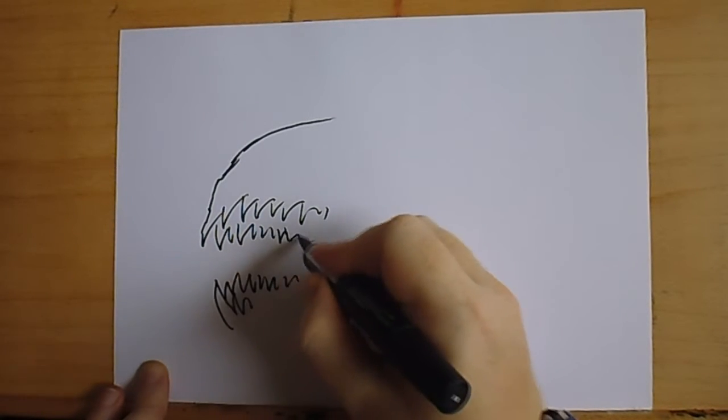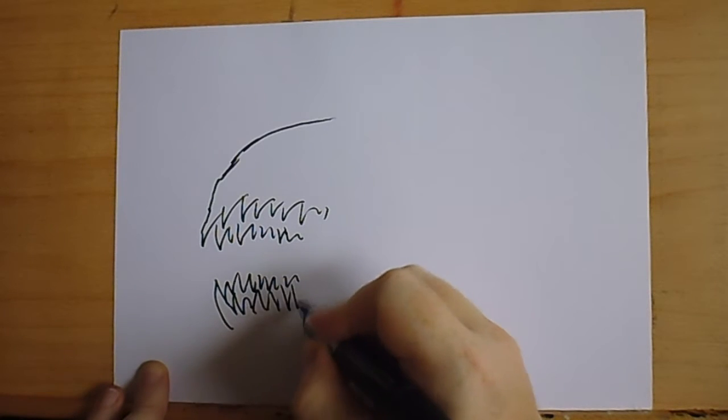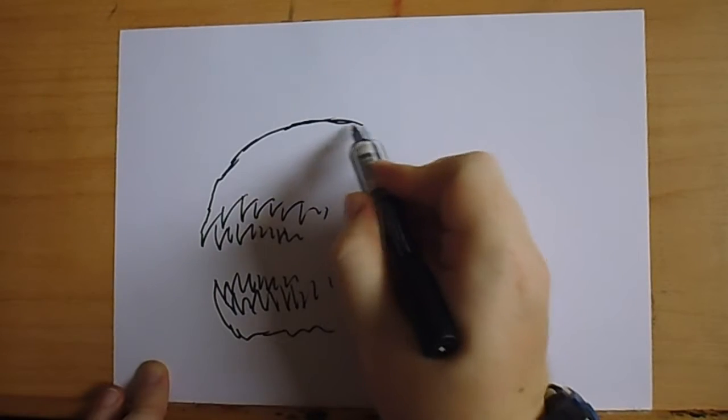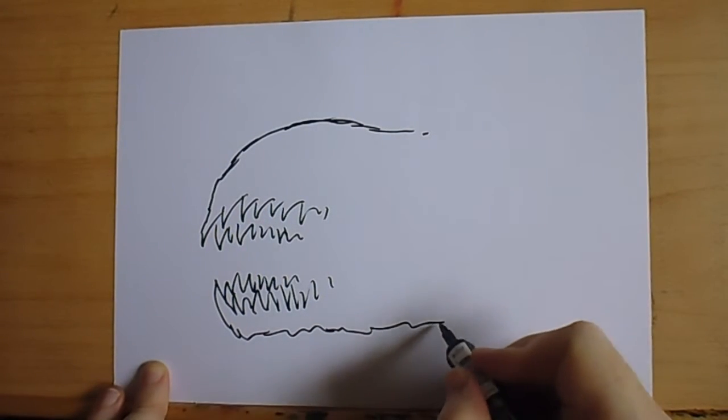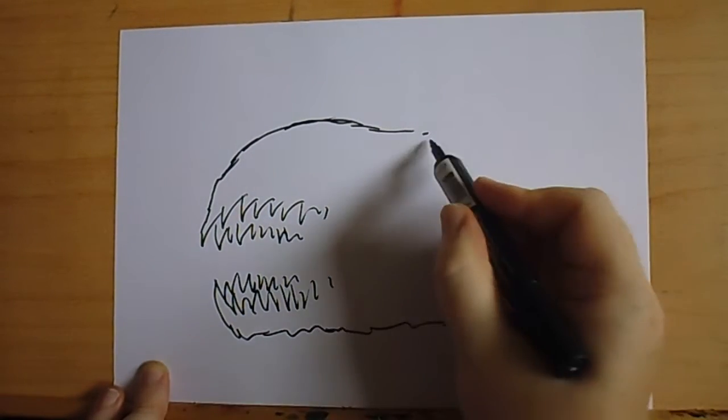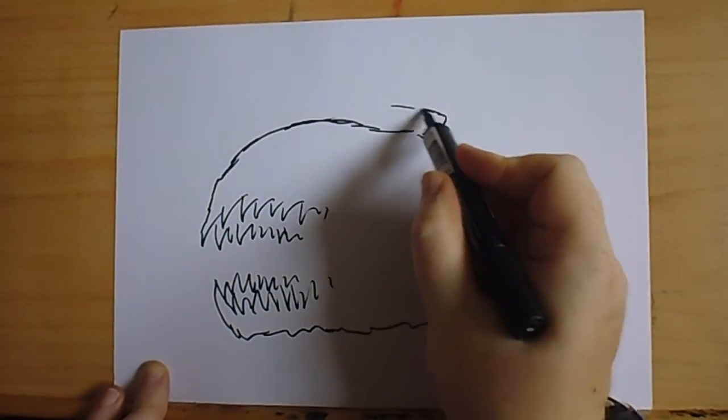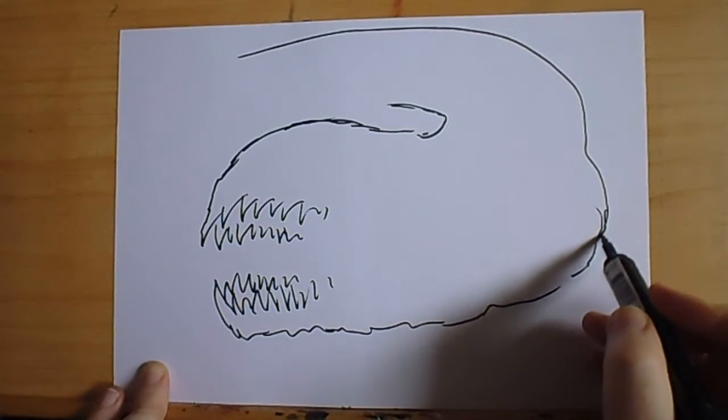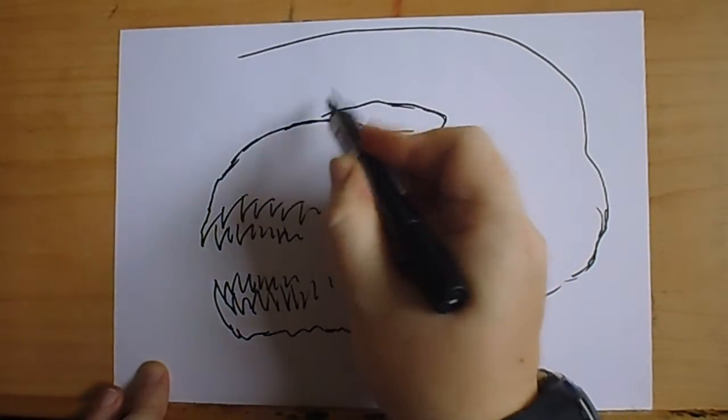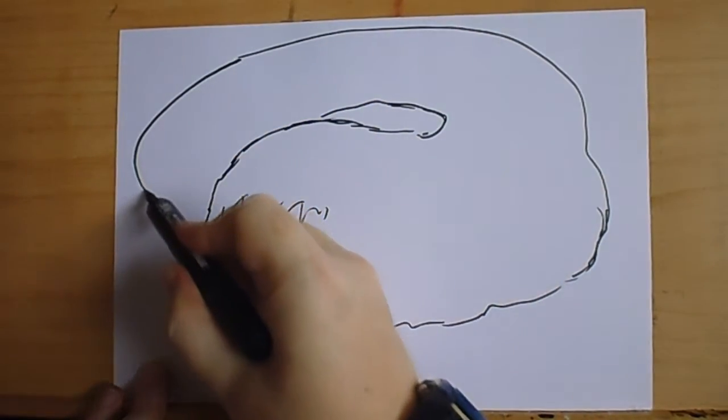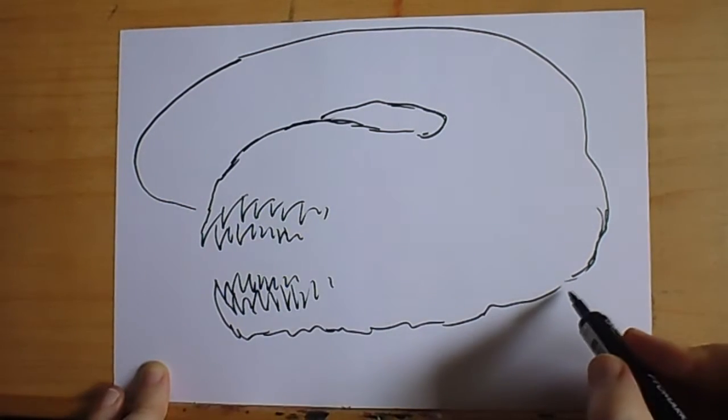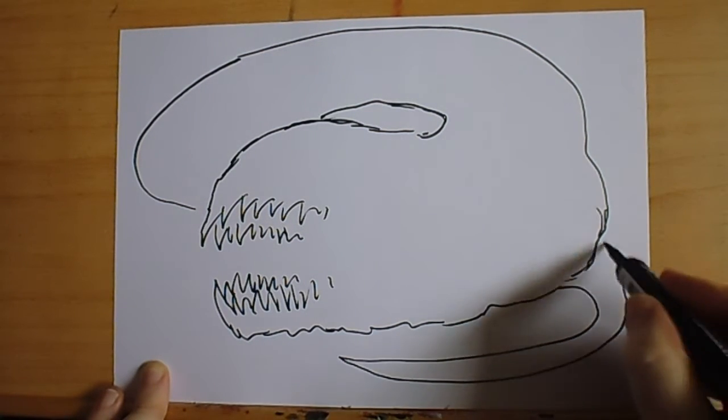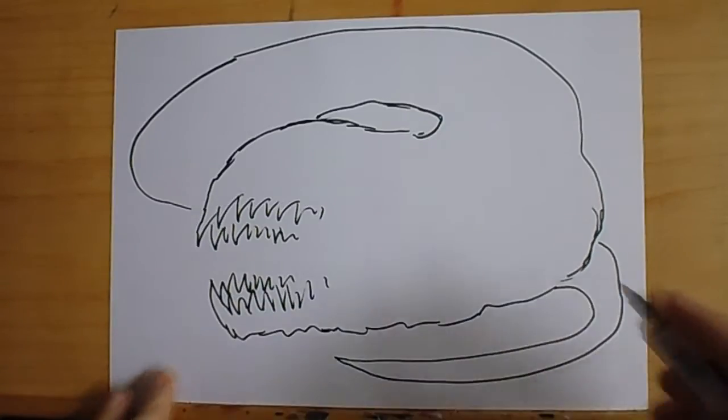This is a giant eel or something, something quite massive. Then the tail probably comes there, something like that.